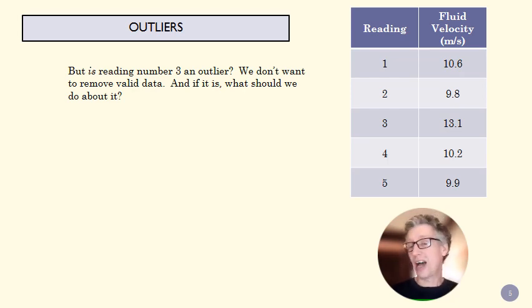So we have to decide if three is an outlier. We don't want to take out good data, and we want to be really careful that we're not trying to manipulate our data. So we want a good process for defining when is something too far outside the norm to include in our calculations.